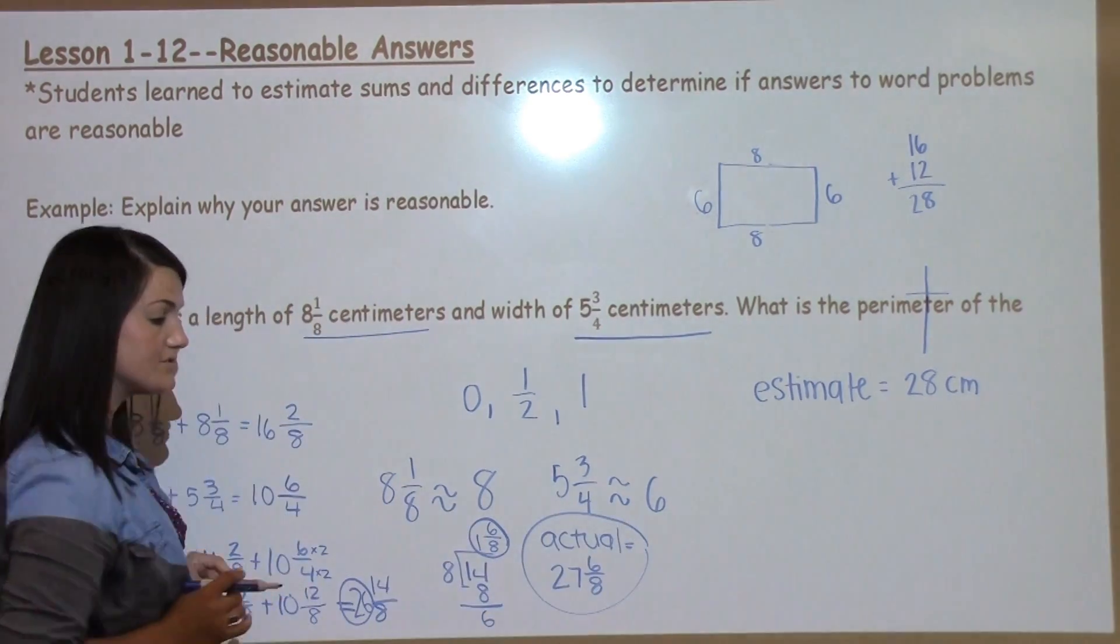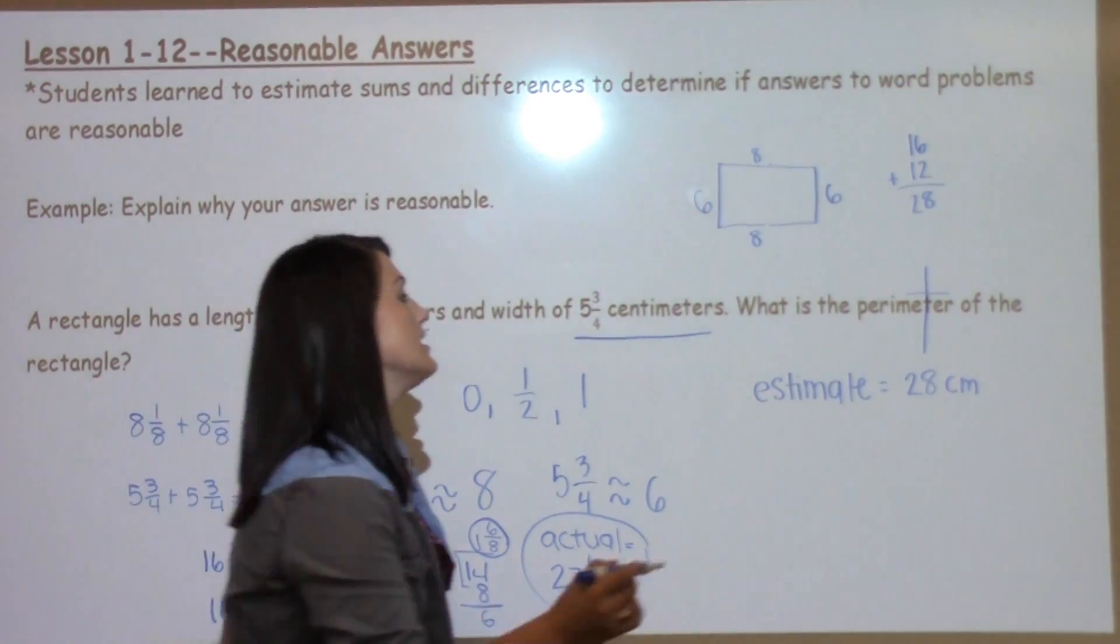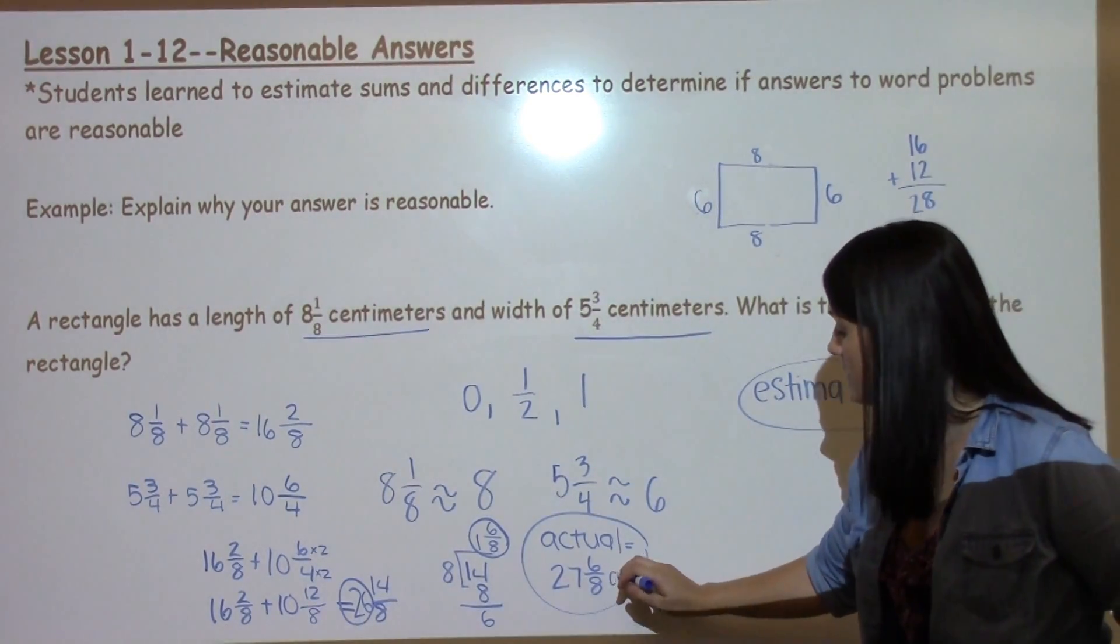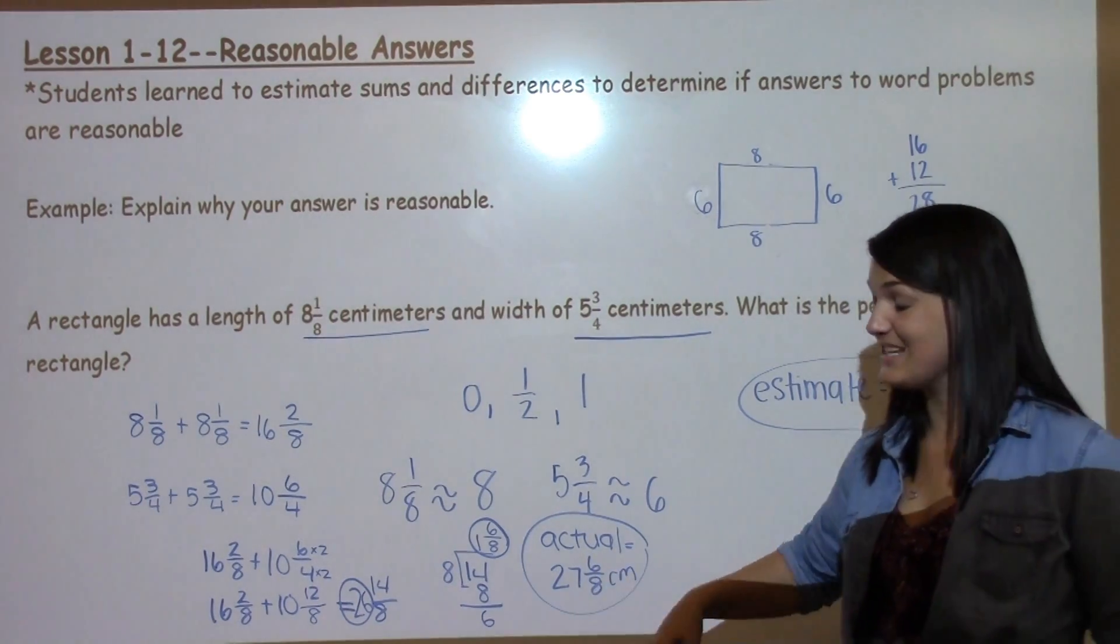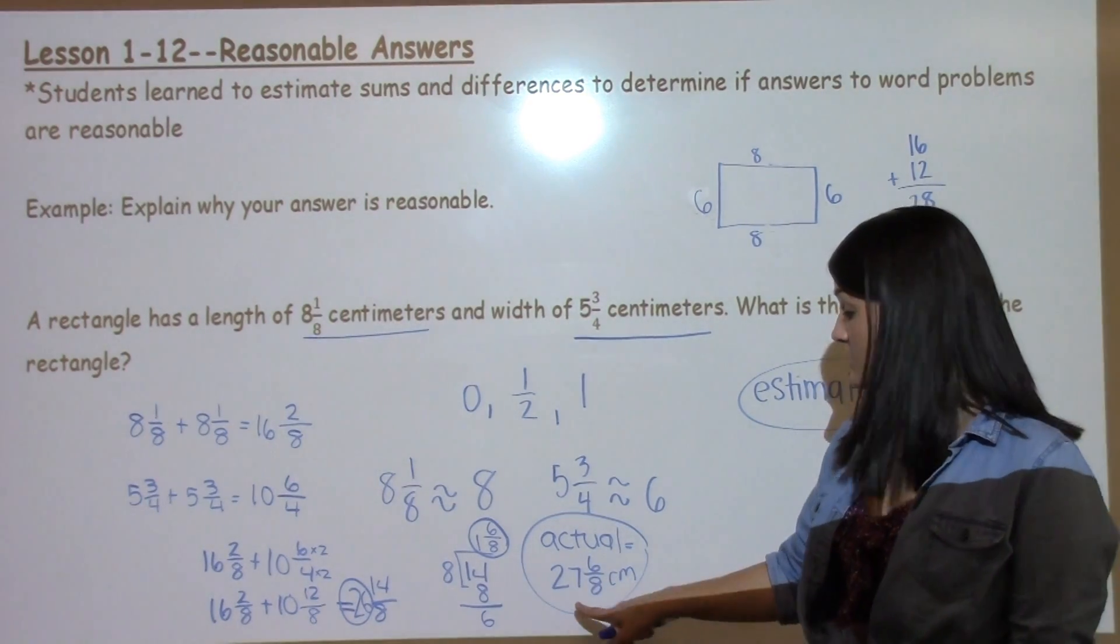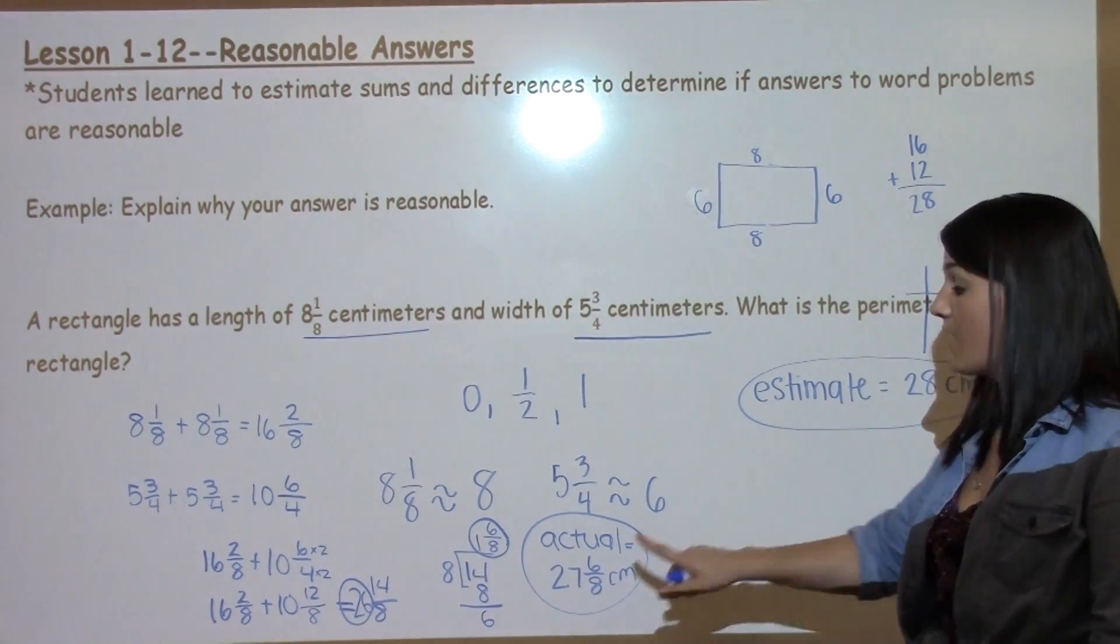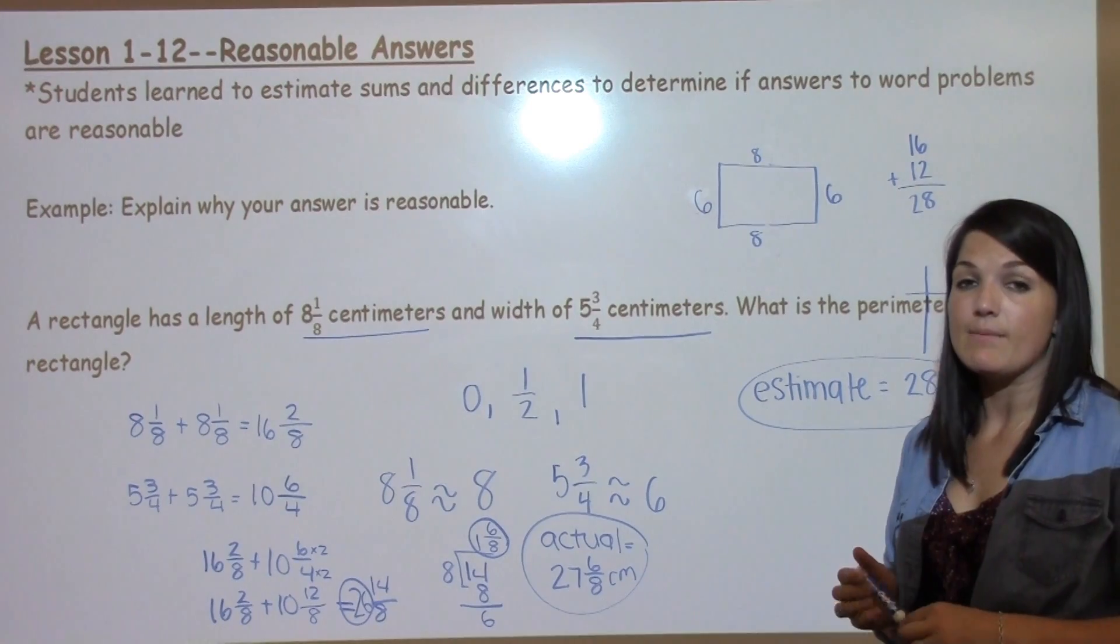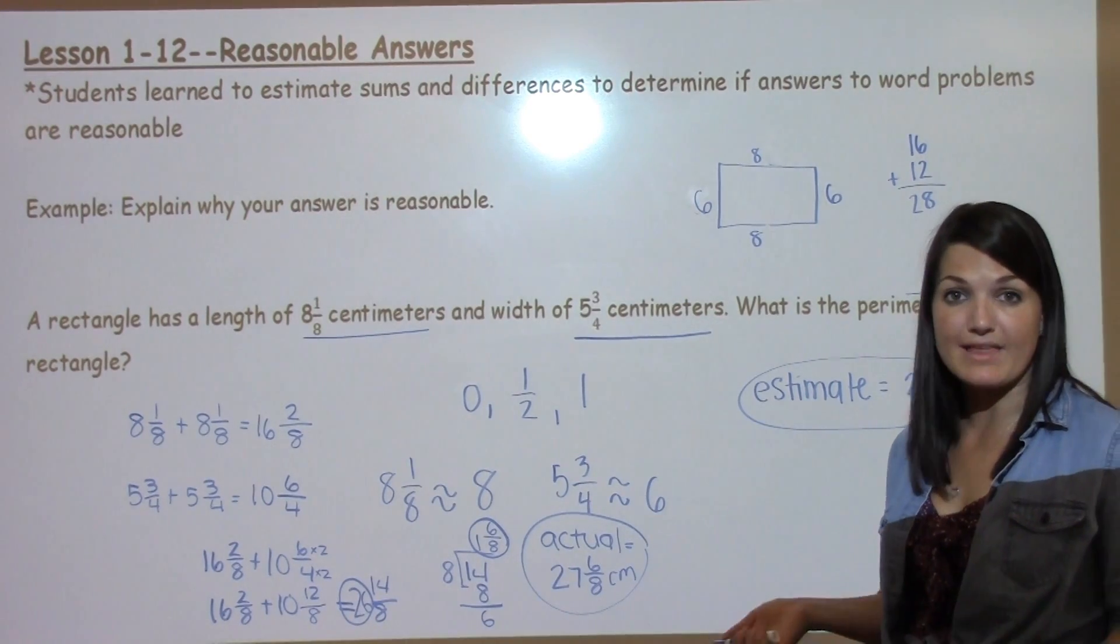I have my actual answer of 27 and 6/8, my estimate of 28. And if you think 6/8 is very close to 8/8, so this would really round to 28. These answers are very, very close, which means my answer is reasonable and my estimate is reasonable, so my math is correct.